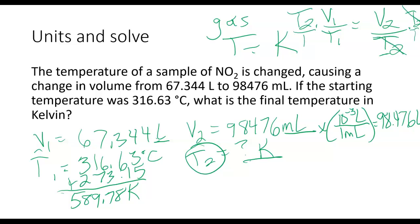So my T2 will cancel on this side. I'll have T2 times V1 over T1 equals V2. And I want to get T2 by itself. So I'm going to multiply both sides by T1 over V1. So T1 over T1 is going to cancel out and V1 over V1 is going to cancel out. Whatever I do on one side of the equation, remember, we have to do on the other side as well. So I'm going to get my T2 is going to be equal to V2 times T1 over V1.